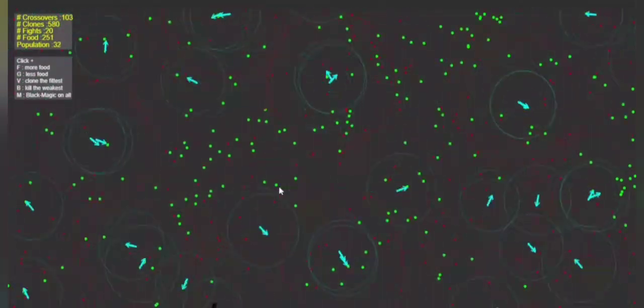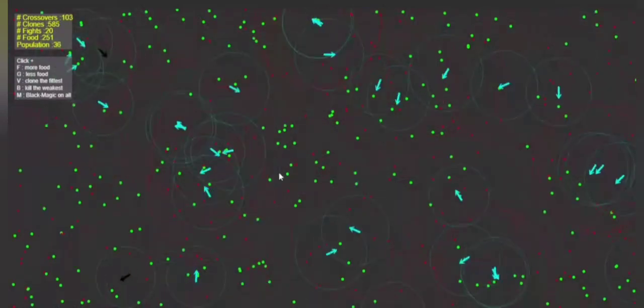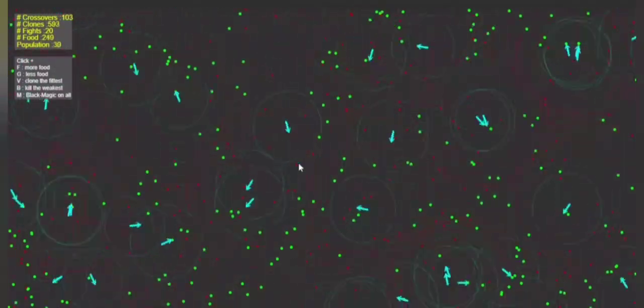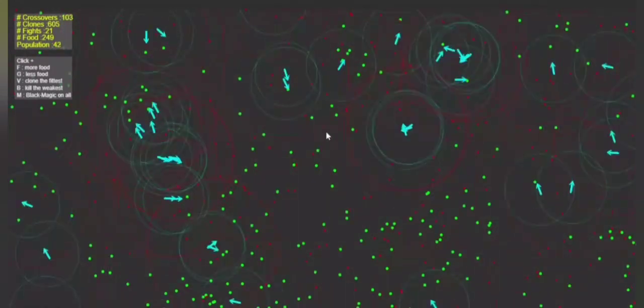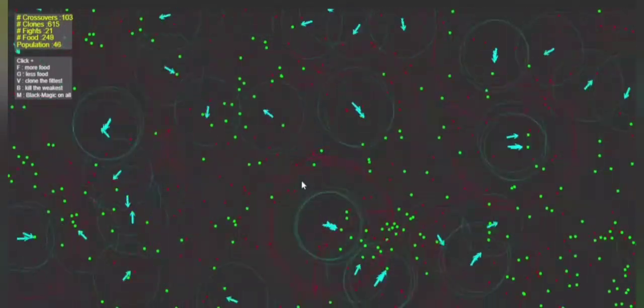The color of each being is indicative of their health and the circle around them indicates their perception radius. I've let this run for a while and they have learned some basic navigation skills by now, which is powered by reinforcement learning.